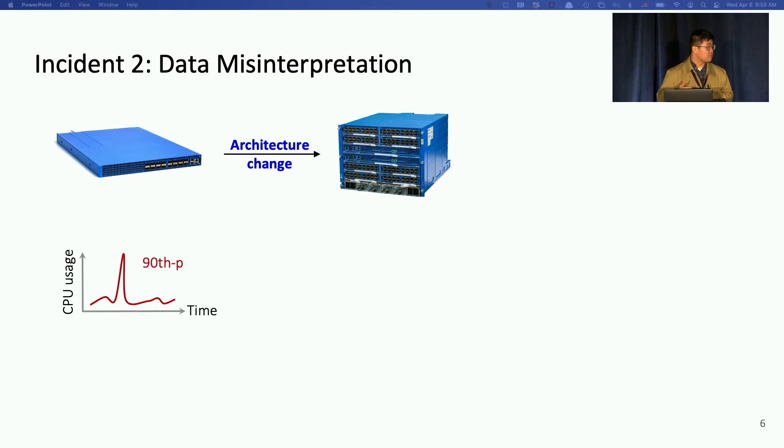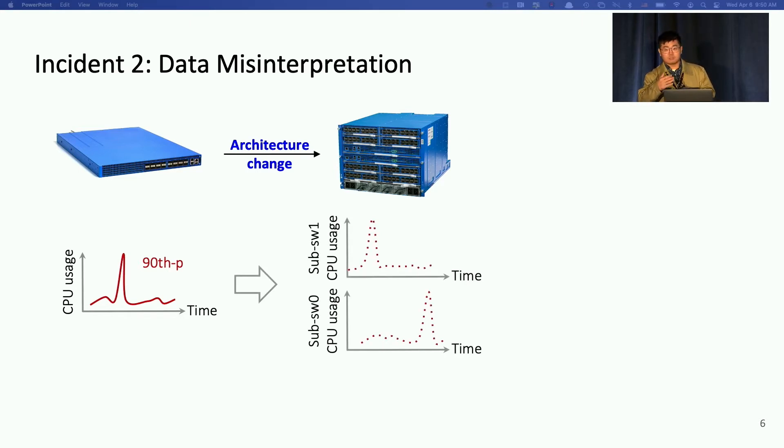So now, instead of having a single unit switch, we have a stack of sub-switches. So each sub-switch also has such 90 percentile counters. However, the operating layer is not aware of the sub-switches architecture change. So we actually average all the 90 percentile counter of sub-switches and report that average value to the alerting layer.